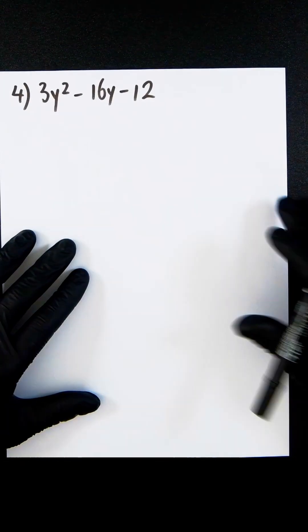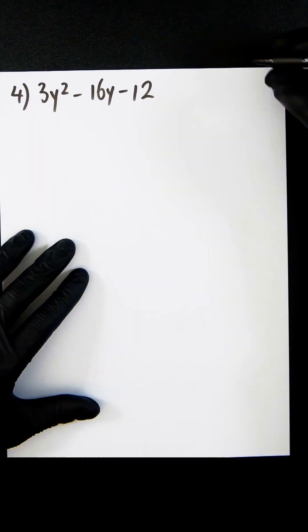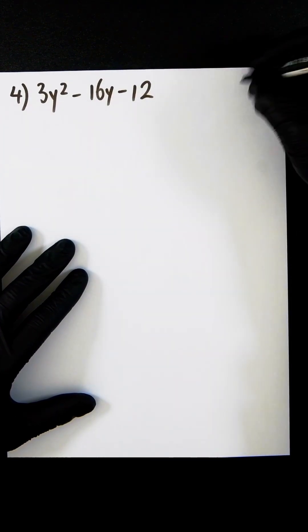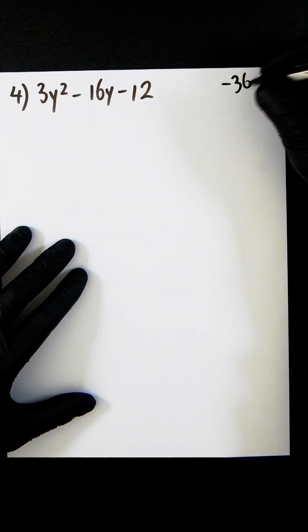Here is our last problem. This time we've got minus 12 and 3. Let's multiply minus 12 and 3 to get minus 36.